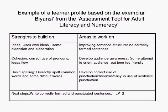Here's an example of a profile — I only had one piece of writing, from an exemplar called 'Beyoncé' from the assessment tool. In terms of strengths for this writer: ideas, cohesion, and basic spelling — those things are pretty much in place at this level. The areas to work on show that improving sentence structure, audience awareness, and correct use of punctuation are all weaker areas.